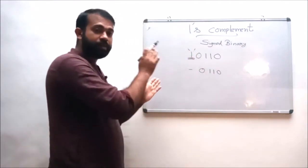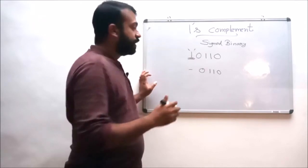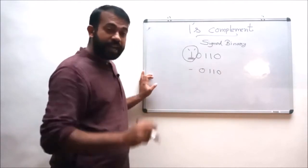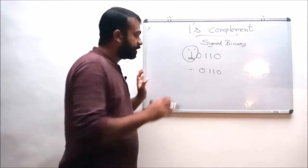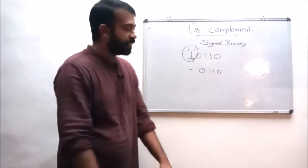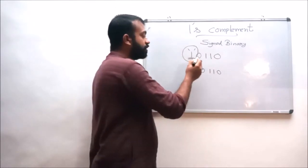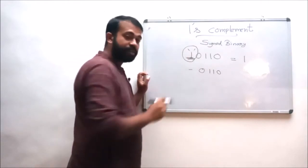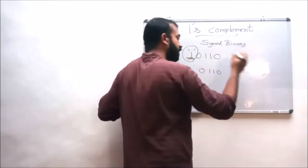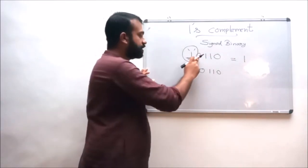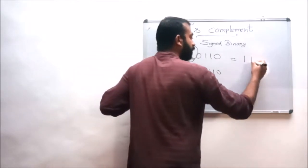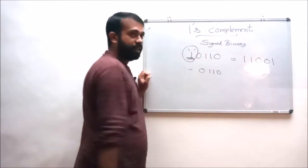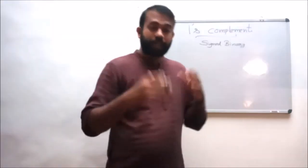So this is the sign of that particular binary number. While converting a signed binary number, the sign bit should not be complemented — that is the point to remember. The MSB or sign bit should not be complemented; the rest of the bits should be complemented. So the one's complement equivalent of 1 0 1 1 0 is 1 1 0 0 1.